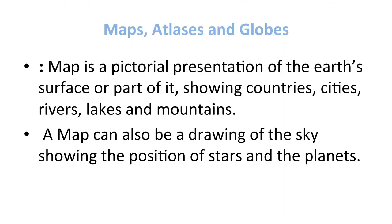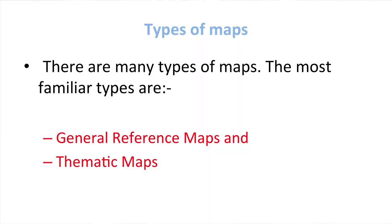A map is a pictorial presentation of the earth's surface or part of it, showing countries, cities, rivers, lakes, and mountains. A map can also be a drawing of the sky showing the position of stars and planets. There are many types of maps. The most familiar types are general reference maps and thematic maps.